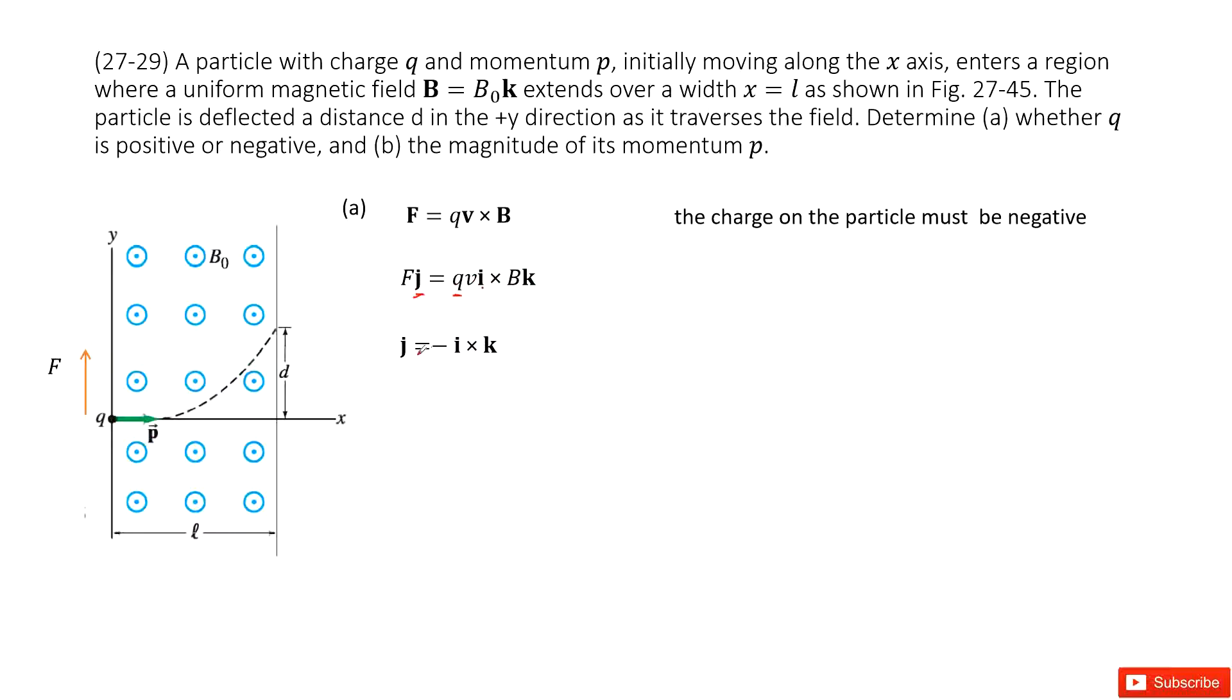Of course, there must be a negative sign. So this negative sign comes from this q. Of course, we know the charge on the particle must be negative because this q brings a negative sign to make the negative i cross k equal to j.